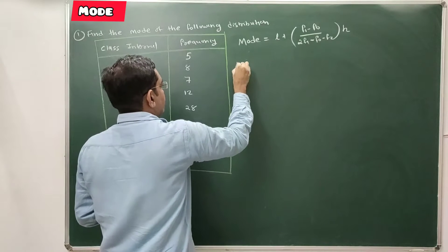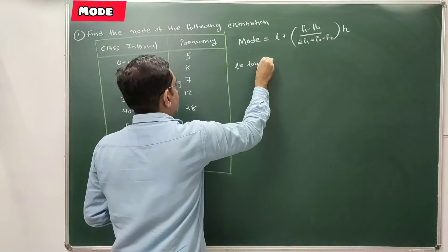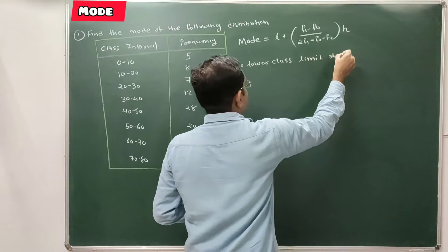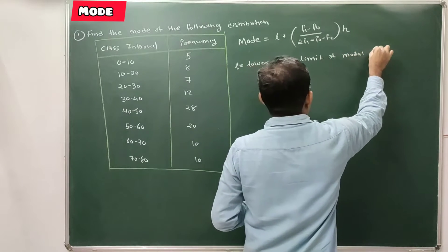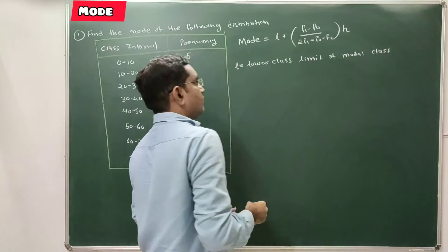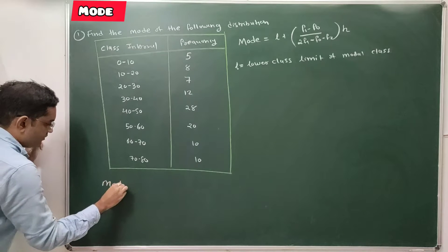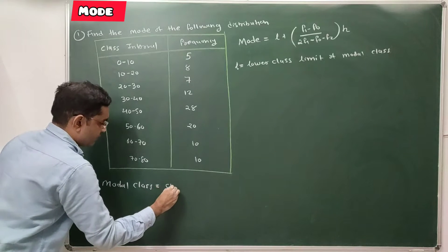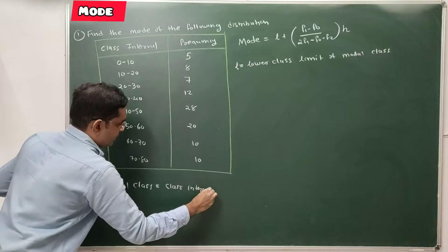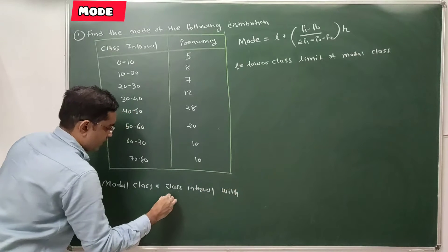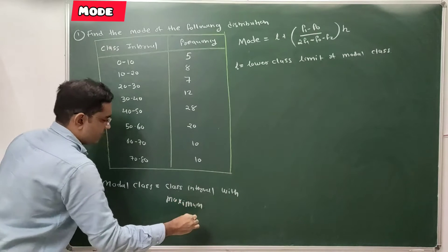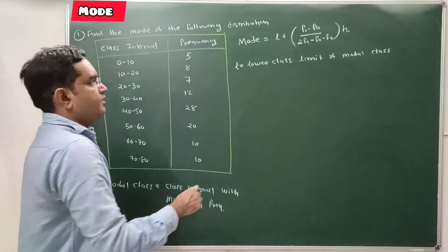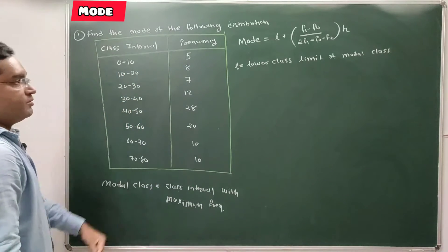Here, l is the lower class limit of the modal class. The modal class is the class interval with the maximum frequency.